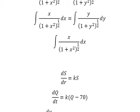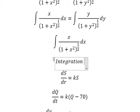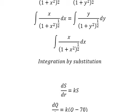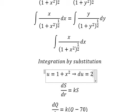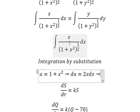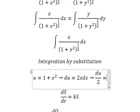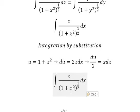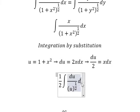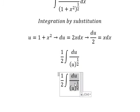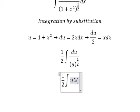I will use integration by substitution. I will put u equals to 1 plus x squared. Then we do the first derivative for both sides and we have 2x dx. Because we don't have a number 2, we divide both sides by number 2. So this one we change by u, and x dx we change by this one. This one we can put into u to the power of negative 1 over 2.